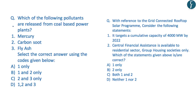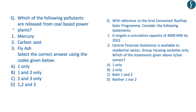Also try the two additional questions from the preliminary examination point of view. First: which pollutants are released from coal-based power plants — mercury, carbon soot, and fly ash? The correct answer is D — all three are released from coal-based power plants. Second question is related to the grid-connected rooftop solar program, with the correct answer being B — statement two only. With this, we have come to the end of today's discussion.